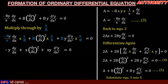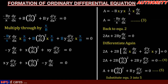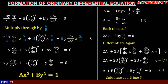Rearranging: xy·d²y/dx² + x(dy/dx)² − y·dy/dx = 0. So the differential equation corresponding to ax² + by² = 1 is: xy·d²y/dx² + x(dy/dx)² − y·dy/dx = 0. This is how to form a differential equation.